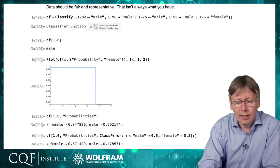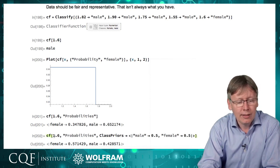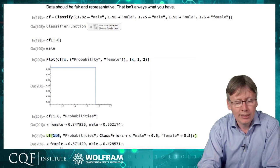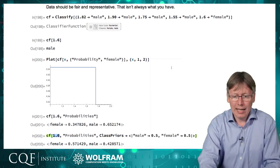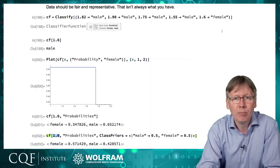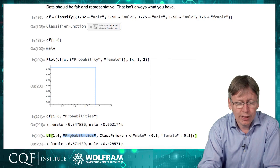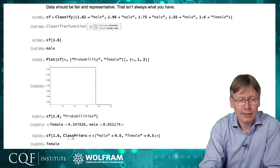But by giving that adjusted piece of information now when we look at this attempt to classify the 1.6 height the probabilities have shifted and it's saying okay given the background and the data together we make a 57% prediction that the outcome will be female. And if I ask it just for the projection it will simply take the most likely probability and say female.